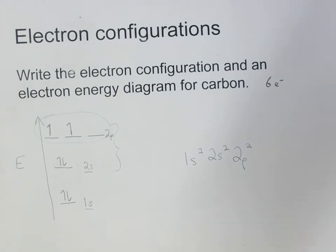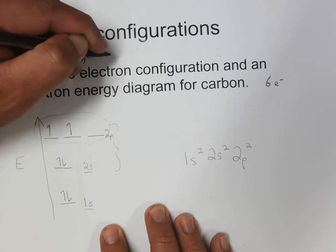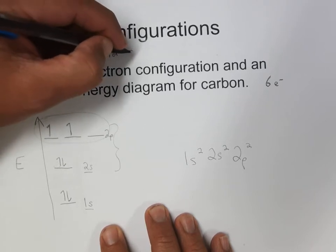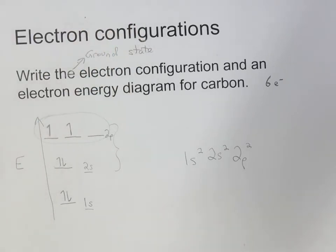In our last video, we worked out the electron configuration and electron energy diagram for carbon, and there are a few things I'd like to elaborate on here. One of them is that, even if it's not said so, what chemists are typically interested in is the ground state electron configuration. There are many electron configurations that can exist for a carbon atom, but the reason that I wrote and diagrammed this one in particular is because it's the lowest energy possibility for arranging the electrons.